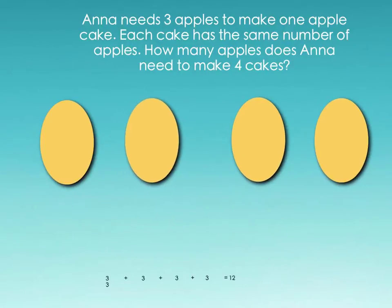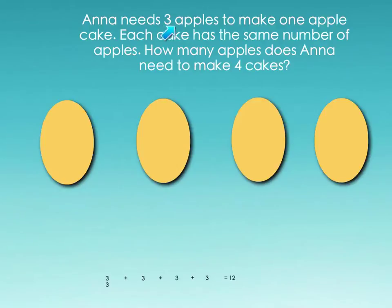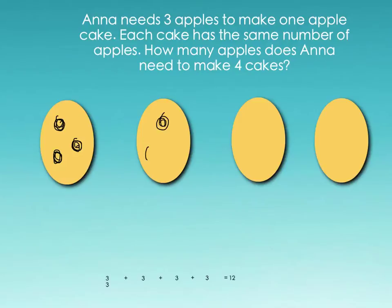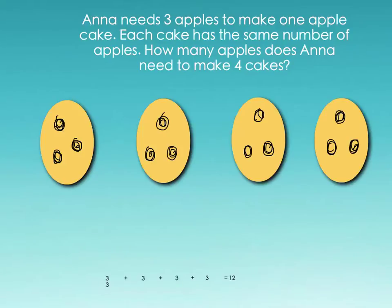When I'm figuring this problem out, I'm going to draw out my four cakes. Now how many apples go into one cake? It says three apples to make one apple cake. So I would take my little pen and draw in my three apples — one, two, three apples for each cake — filling in three apples for all four cakes. I have to have equal groups for this to be a multiplication and equal group problem.